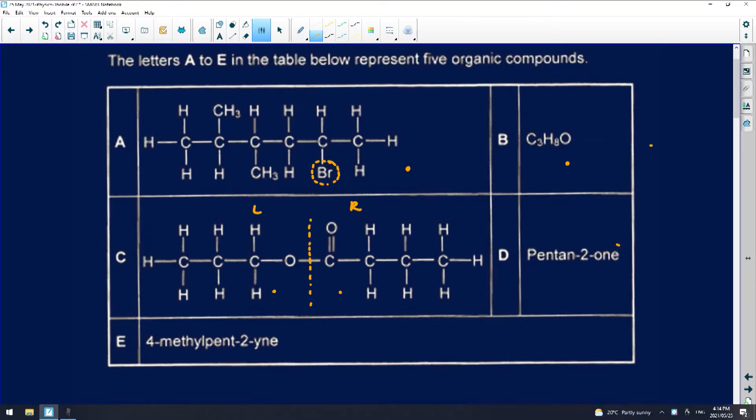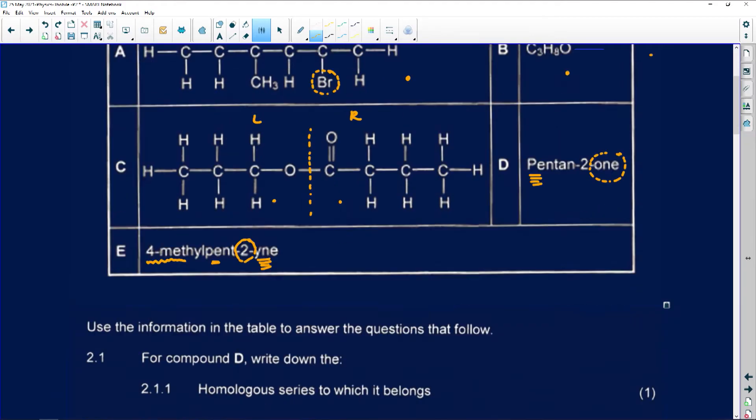D is pentin-2-one. The name ending tells me it is a ketone. Its longest chain has got five carbons. Number E, longest chain is five. I can see on the fourth one there's a side chain with methyl, and on the second carbon I can see there's a triple bond. How do I know this? Because of the name ending of Y-N-E. Now, just quickly, in less than a minute, I've already identified everything that I'm dealing with, so when I'm answering the questions, I have some sort of idea of what they're actually asking me, and I know where to navigate.